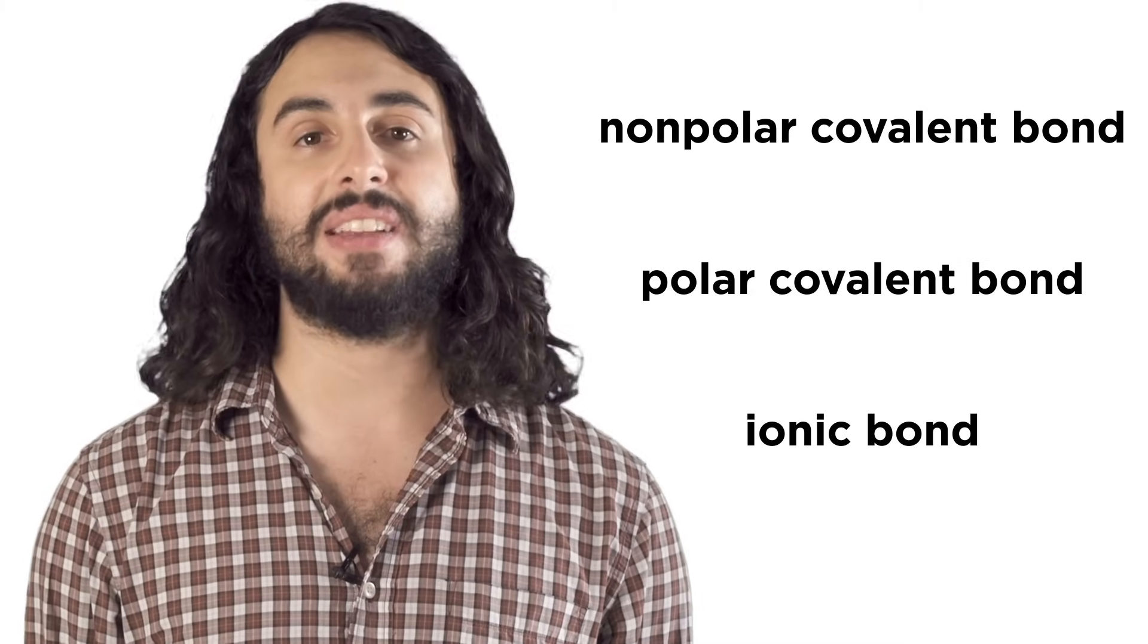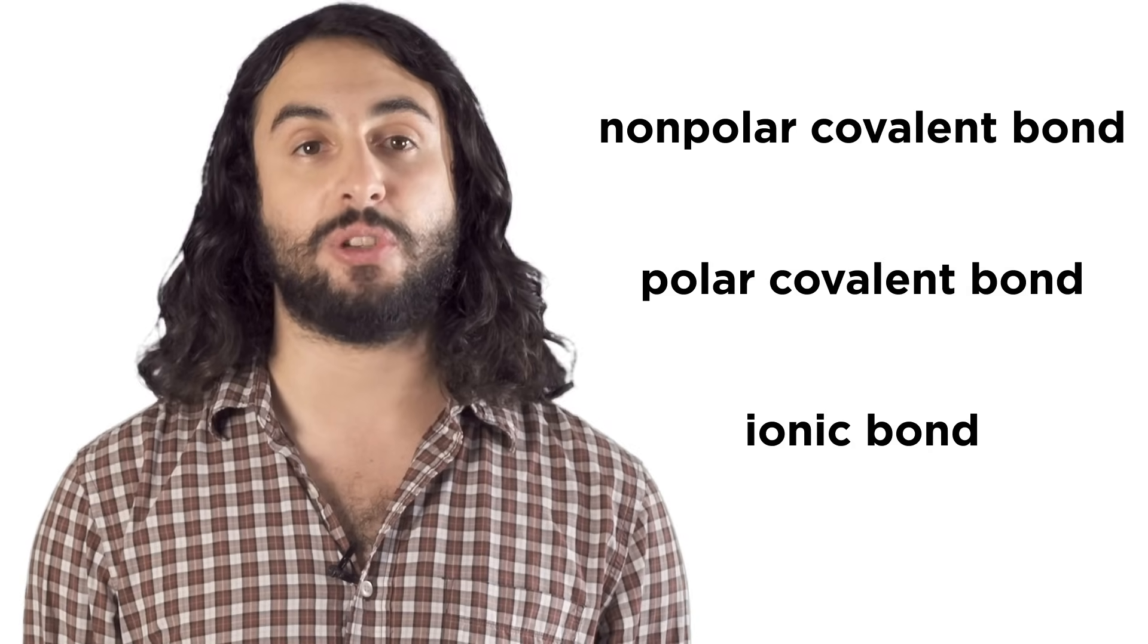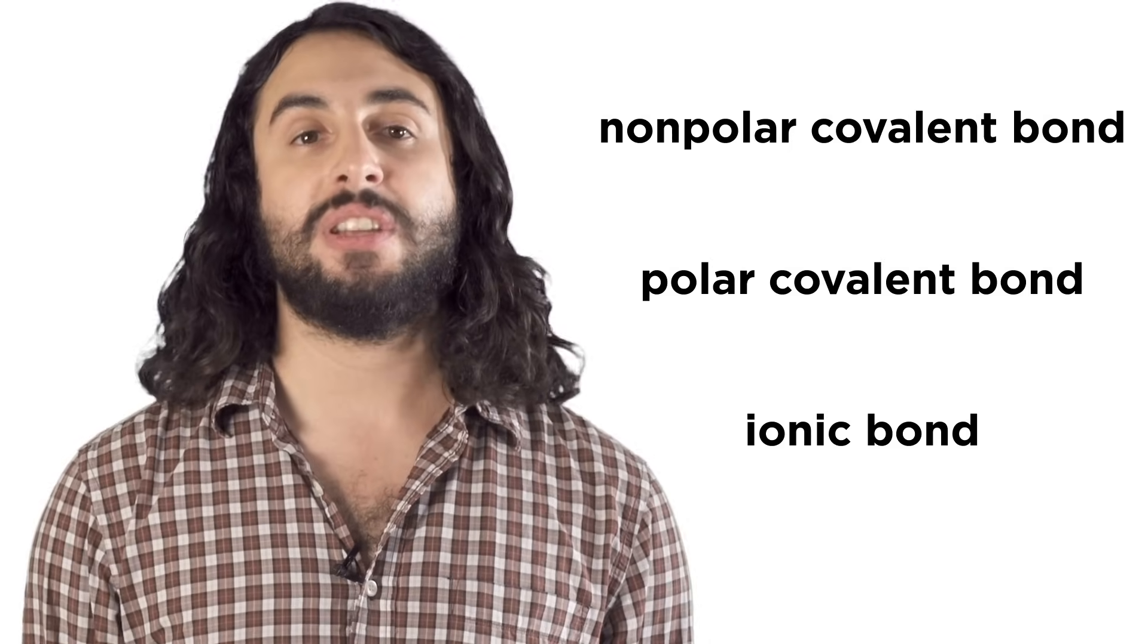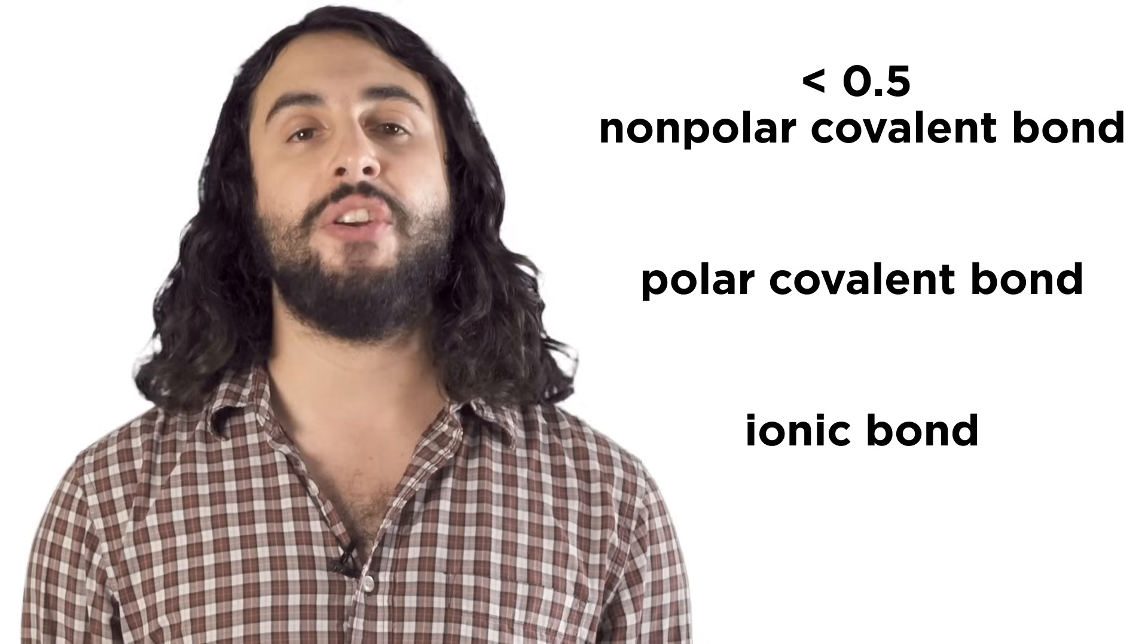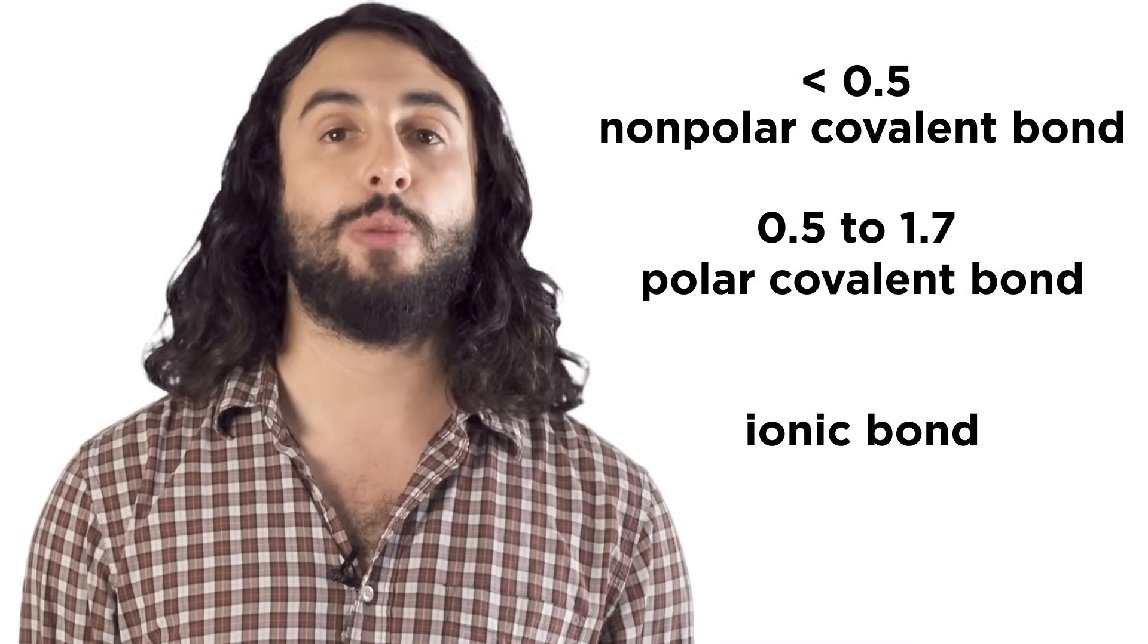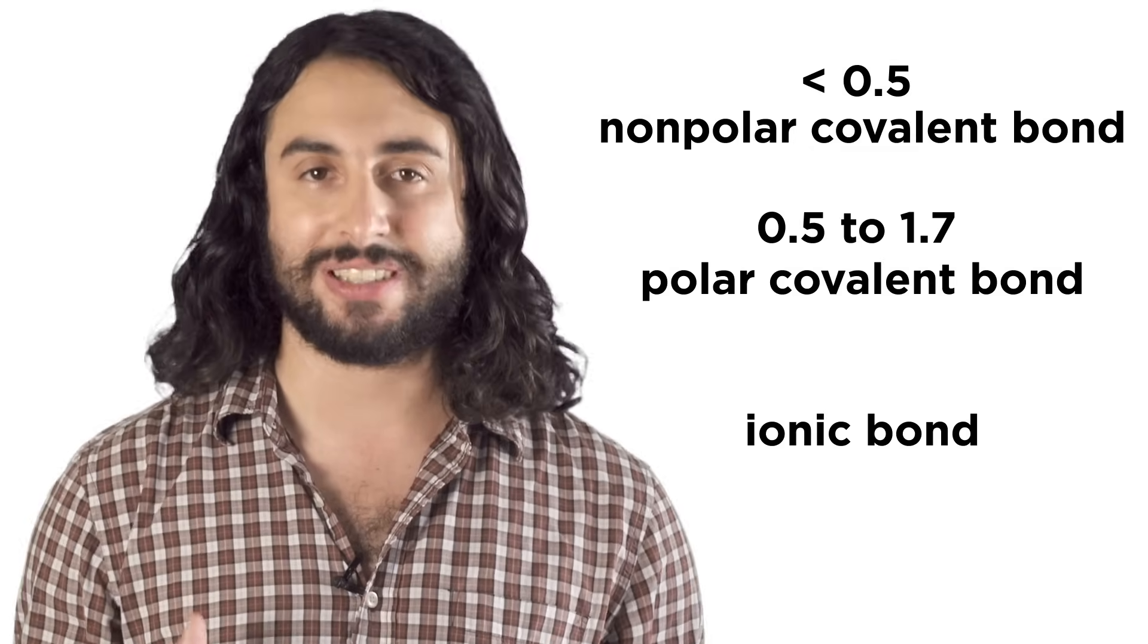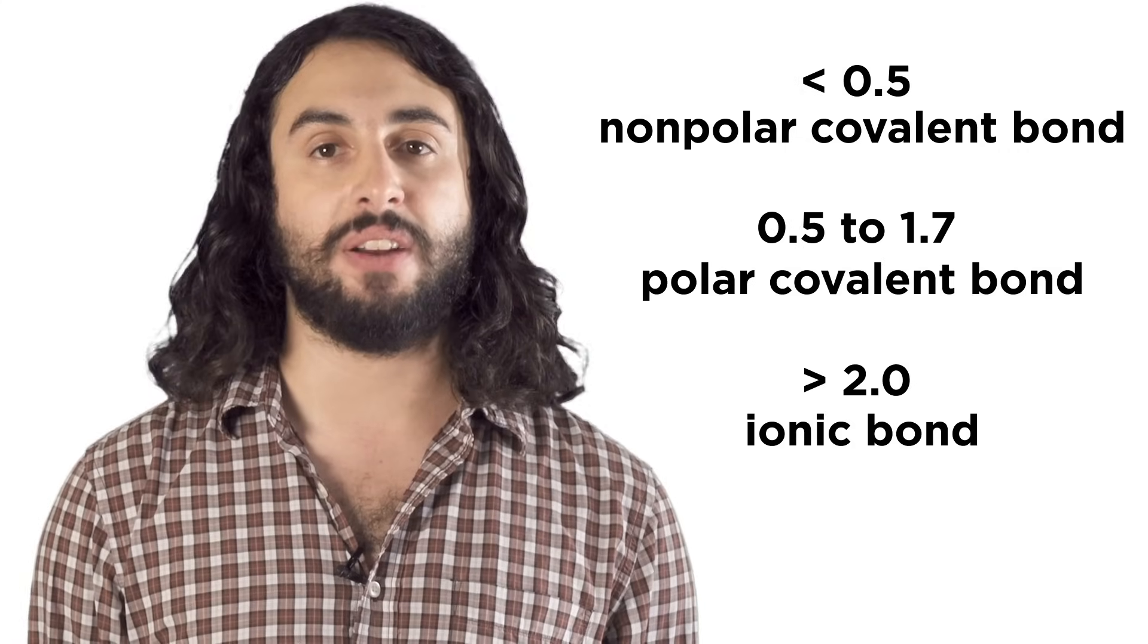Other than strange phenomena like metallic bonding, these are the main ways atoms bind to one another. Remember that you can predict the type of bond that will form between two elements by comparing their electronegativities. If the difference is very low, less than 0.5 or so, it will be a nonpolar covalent bond where the electrons are shared evenly. If between about 0.5 and 1.7, it'll be a polar covalent bond where the electrons are shared but one atom holds them more tightly. If above 2.0 or so, one atom will simply steal an electron from the other and you'll get ions that are joined by an ionic bond.